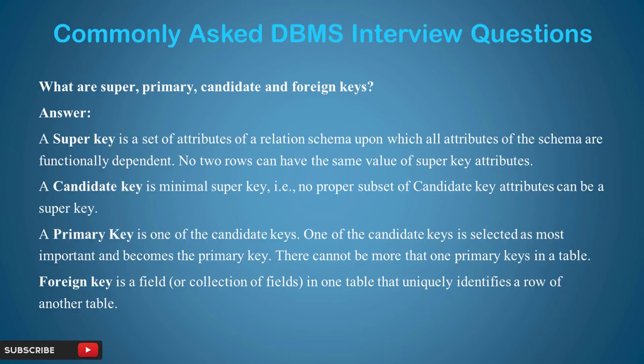A candidate key is a minimal super key, meaning no proper subset of a candidate key can itself be a super key. What can be a candidate key? Student number can be a candidate key. Phone number can also be a unique number, so phone number can be a candidate key. So here we have two candidate keys: student number and phone number. A schema can have more than one candidate key.